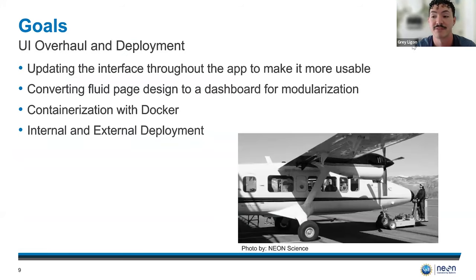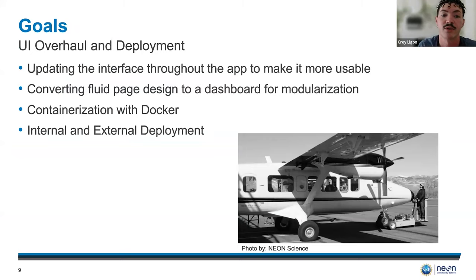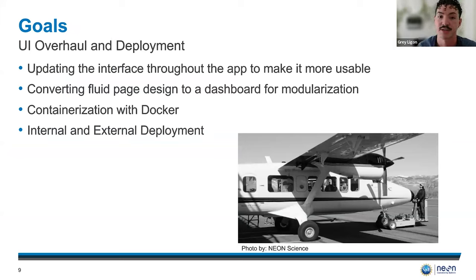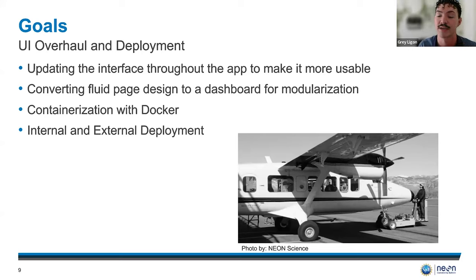Taking all that input, we identified the main two goals for the project: UI overhaul and deployment. Deployment consists of containerization with Docker and then internal and external deployment on NEON servers. For the UI overhaul, we wanted to take the interface of the app and make it more usable by converting from a fluid page design to a dashboard for modularization. The point of that is so that for future development, if we wanted to add or remove different features or tools, we can do that in a plug-and-play style system without touching the base code and breaking the whole app.